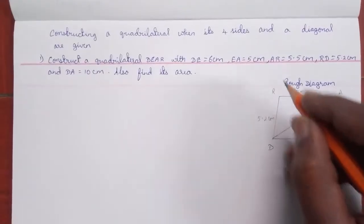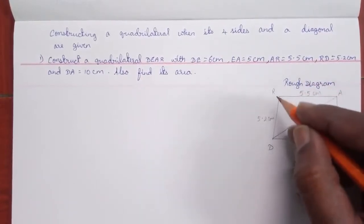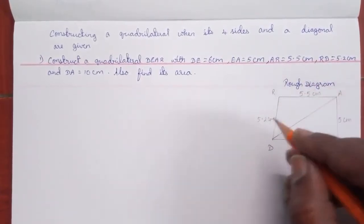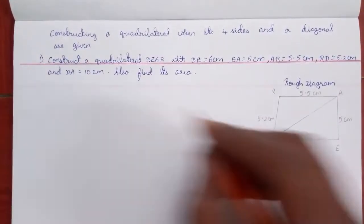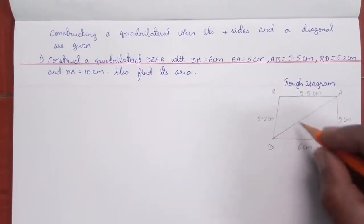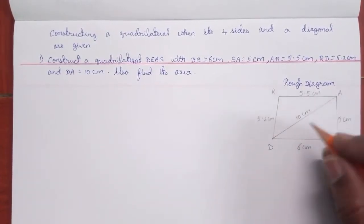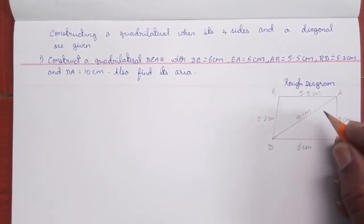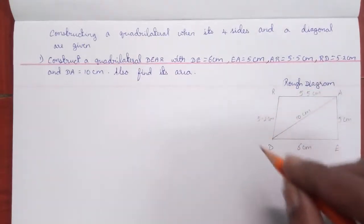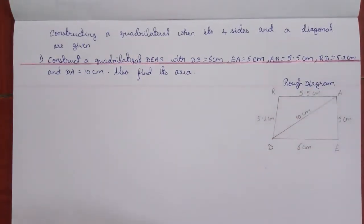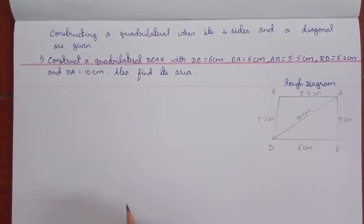AR is 5.5 cm and RD is 5.2 cm. These are the given measurements from the question. Then we draw the rough diagram first, before constructing the main diagram.